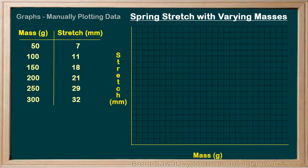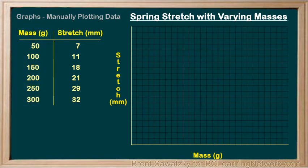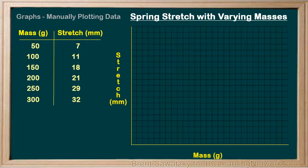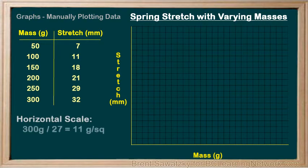Let's establish our scales for this graph. On the x-axis, we have mass which goes up to 300 grams, so we need to fit 0 to 300 grams along this axis. Picking the scale involves some creativity — we want to use as much of the available grid as possible without overshooting. Using less than half the grid is generally considered poor practice. We count our squares and find that we have 27 squares along the bottom, so 300 divided by 27 equals 11 grams per square.